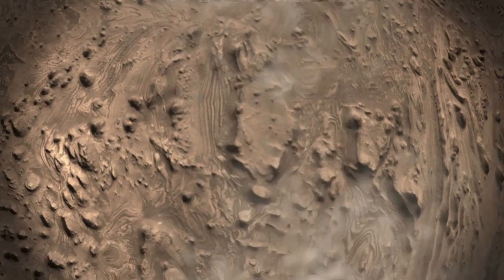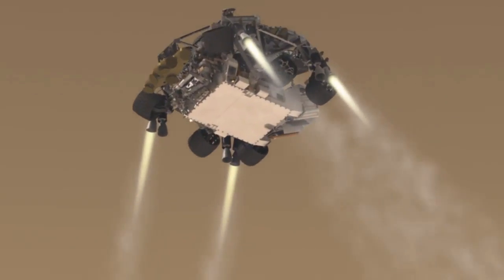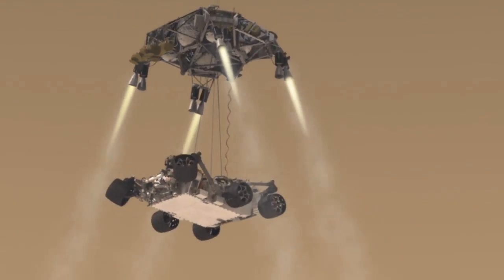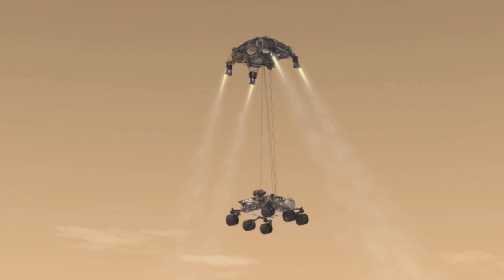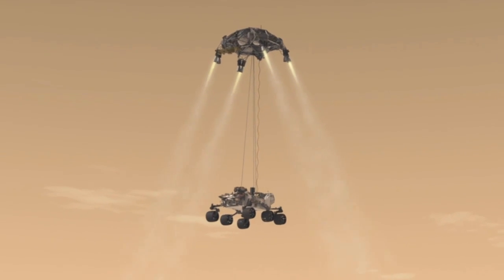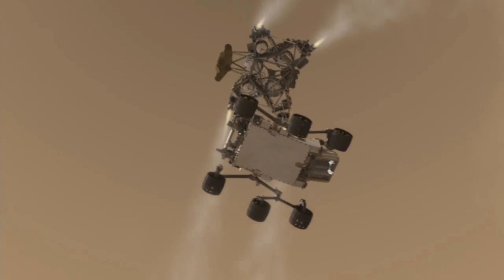Once it has descended to about 60 feet above the ground and going only about two miles per hour, the rover separates from the descent stage. As the rover is lowered, the wheels deploy in preparation for landing.